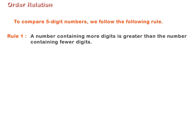Rule 1: A number containing more digits is greater than the number containing fewer digits. For example, 15 is greater than 7. 163 is greater than 53. 3,150 is greater than 999.